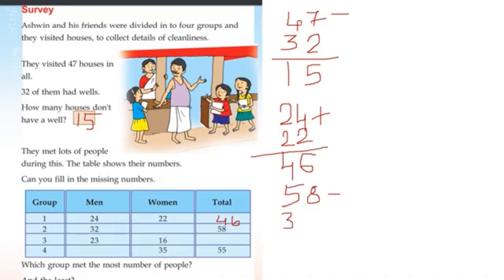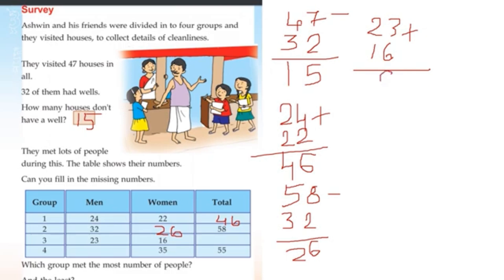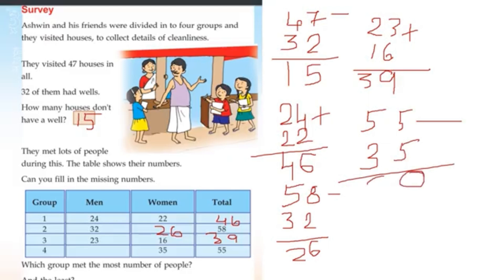The total number is 32 for the next entry. Now we fill in total numbers for another group. Men total: 23 plus 16. 3 plus 6 is 9, 2 plus 1 is 3. Total is 39. Next: women total. Men: 35. 5 minus 5 is 0, 5 minus 3 is 2. Total: 28.